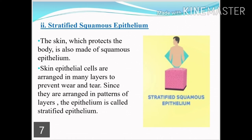The second type of epithelial tissue is stratified squamous epithelial tissue. The main example is skin, which protects the body and is made up of squamous epithelial tissue. In skin, the squamous tissues are arranged in many layers. Since they are arranged in a pattern of layers, they are called stratified squamous epithelial tissue — meaning simple squamous epithelial tissue present in layers one above the other. They help to prevent wear and tear.